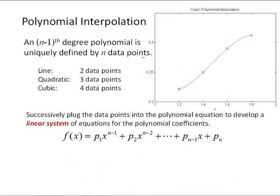Here's that cubic polynomial through four data points again. Any n minus one degree polynomial is going to be uniquely defined by n data points. For example, a line, which is a first degree polynomial, is uniquely defined by two data points. A quadratic is a second degree polynomial, uniquely defined by three data points. A cubic is a third degree polynomial, uniquely defined by four data points. We can see this by using the general form of a polynomial equation and successively plugging in data points to develop a linear system of equations for the polynomial coefficients.